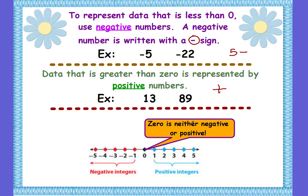This number line down here is very important — we're going to be using this a lot. Zero is neither negative nor positive; zero is just zero. But on the number line, all of the numbers to the right of zero are greater than zero, and these are the positive integers. All of the numbers to the left of zero, or smaller than zero, are called negative integers. Our number line is now going to extend to the left of zero and include our negative numbers.